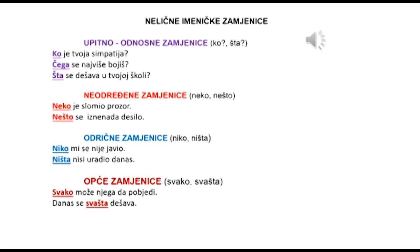Odrične zamjenice: niko za bića, ništa za stvari. Na primjer: nikom se nije javio; ništa nisi uradio danas. I opće zamjenice: svako za bića, svašta za stvari. Na primjer: svako može njega da pobijedi; danas se svašta dešava.